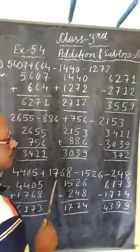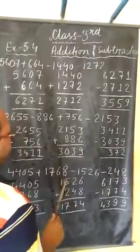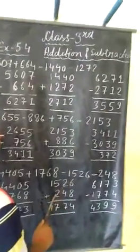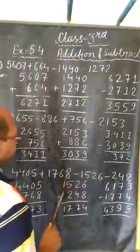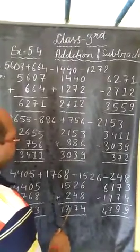After adding the positive numbers, we add negative numbers. Our negative numbers are 1526 and 248. When we add the negative numbers, we get 1774.